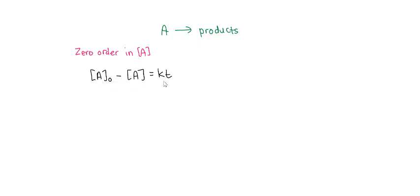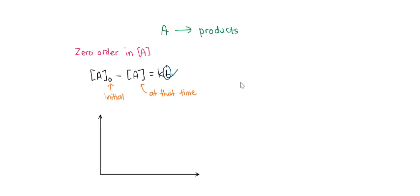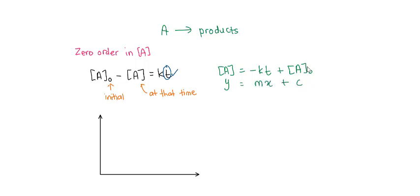The integrated rate equation for the zero-order reaction is: concentration of A₀ minus concentration of A equals KT, where A₀ is the initial concentration and A is the concentration at time T. To plot a linear graph for zero-order reaction, rearrange the equation as: concentration of A equals negative KT plus concentration of A₀, where Y is concentration of A, the Y-intercept is concentration of A₀, and the gradient equals negative K. You will get a linear graph with a negative slope.